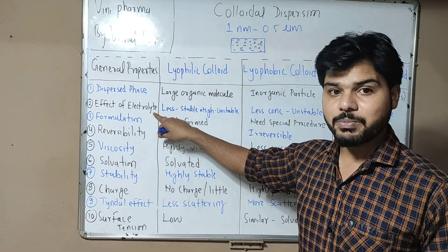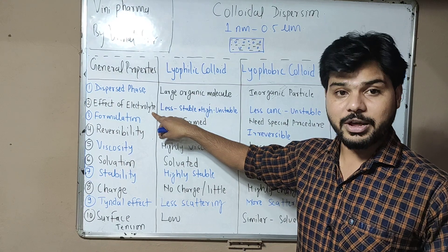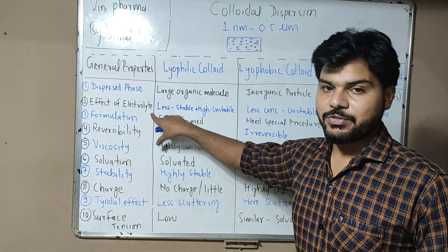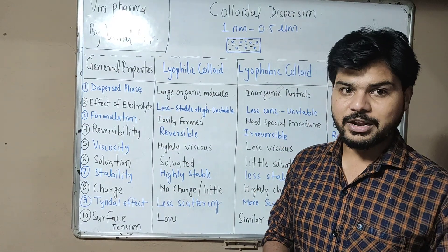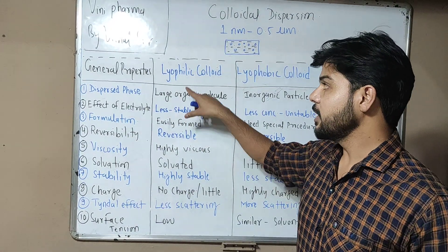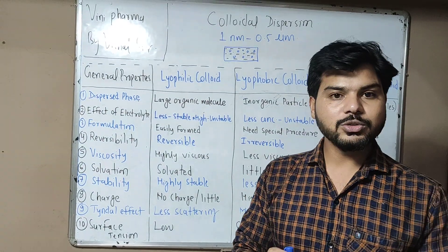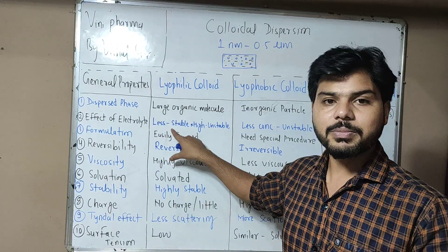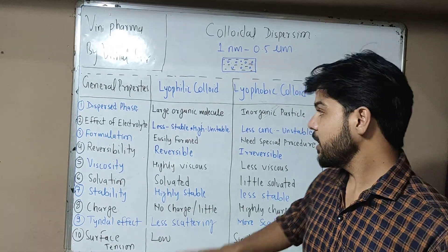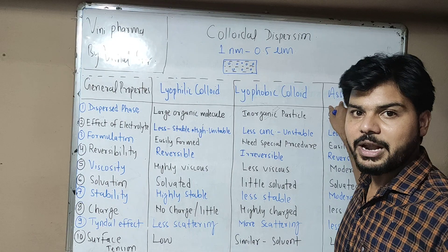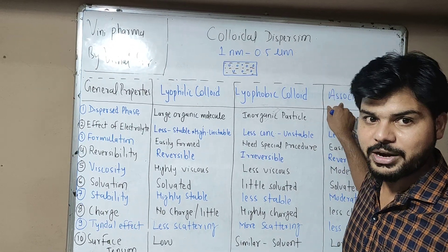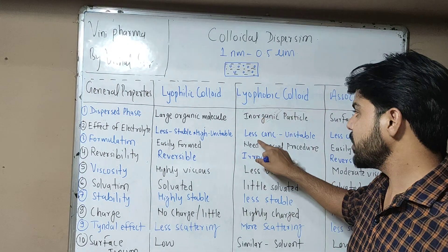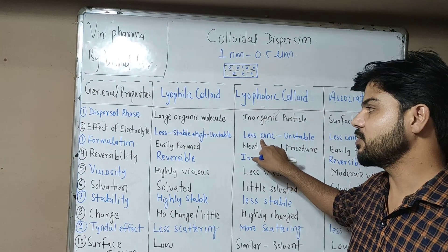The effect of electrolyte is frequently asked in examinations as well as in GPAT exam — what effect does an electrolyte like NaCl have on the colloidal system? For lyophilic colloids, solvent layers circulate around the particles, so adding a small amount of electrolyte has no effect. Similarly, adding a small amount of electrolyte to association colloids has no effect — they remain stable. However, lyophobic colloids are charged particles and become unstable even at low electrolyte concentration.